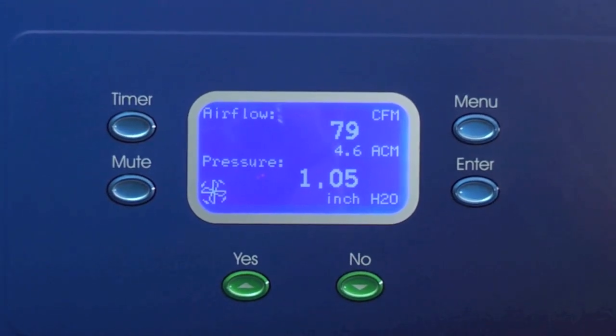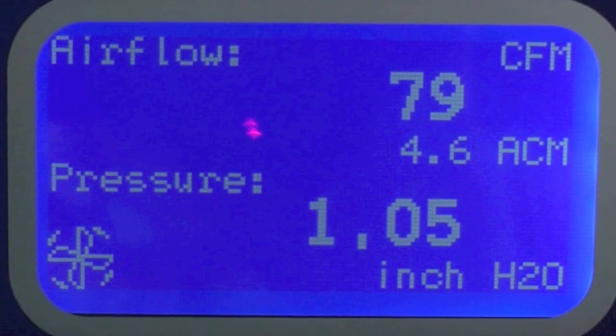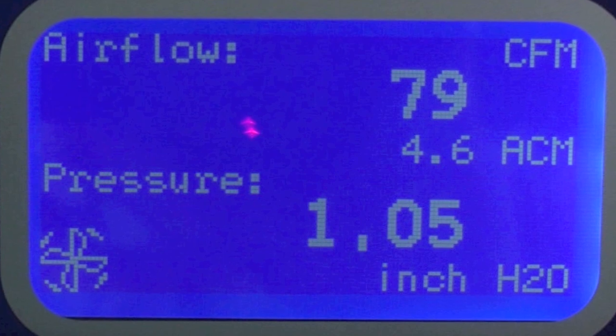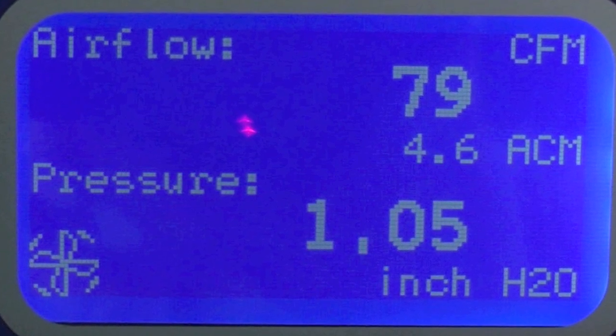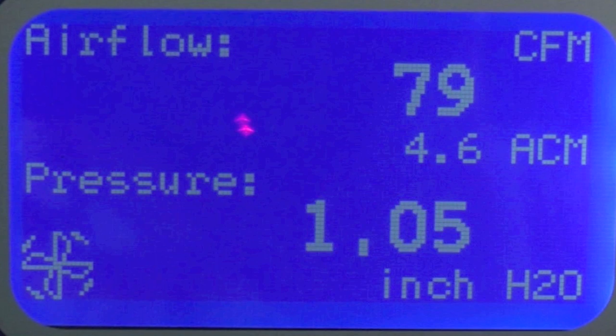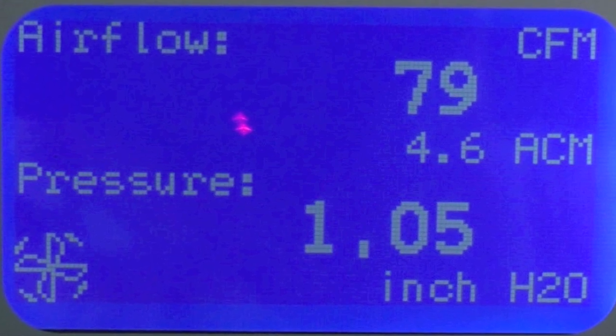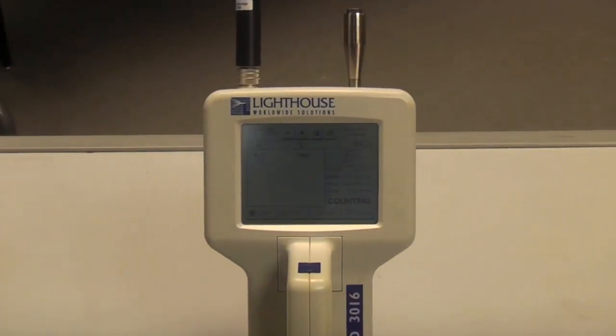The display monitors the air volume dilution rate in cubic feet per minute, the air total changes per minute of the glove box internal volume, and the main chamber static pressure in inches of water column pressure.